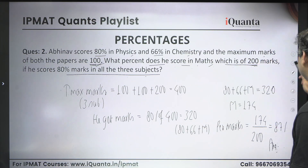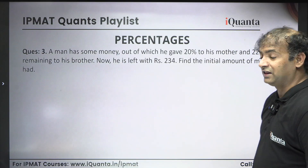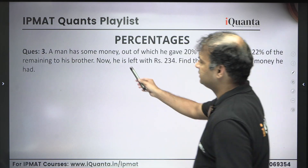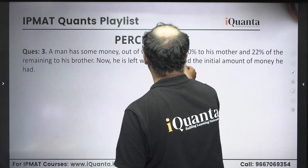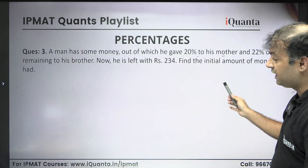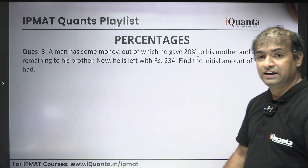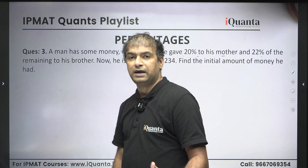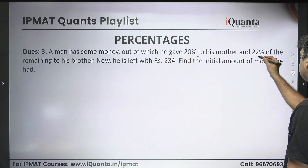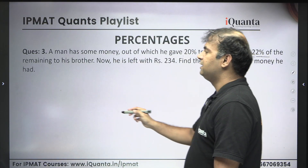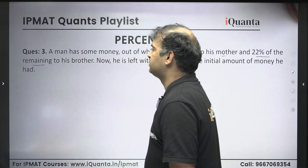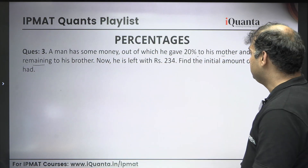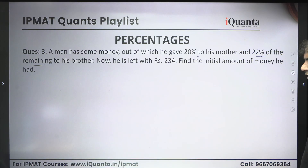Moving to the next question — the level of questions will increase with every question. This question says that there is a man who has some money, out of which he gave 20% to his mother and 22% of the remaining to his brother. The key line is '22% of the remaining.' He is left with rupees 234 — we need to find his initial amount of money.